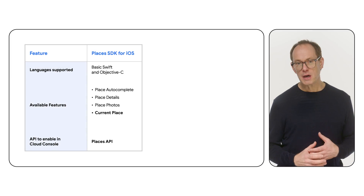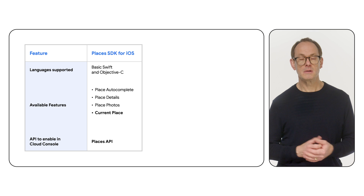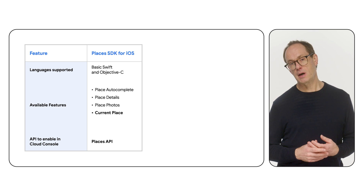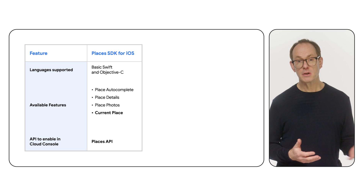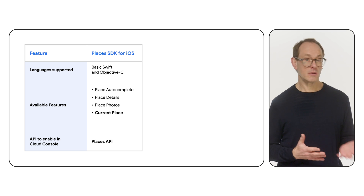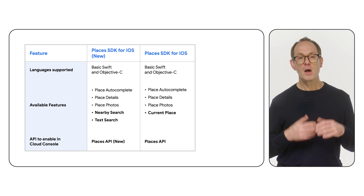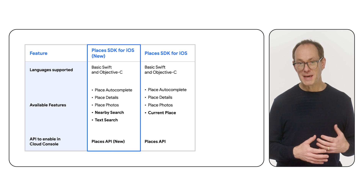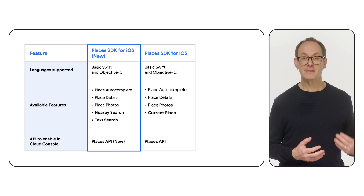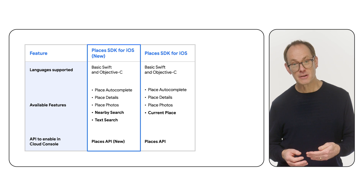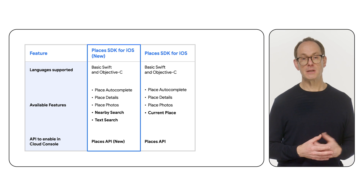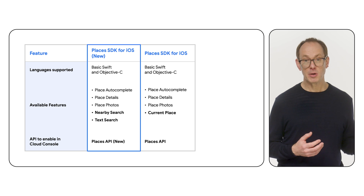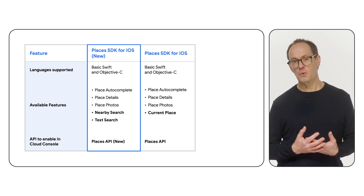Places SDK for iOS has been around the longest. It offers basic Swift support and a minimal set of APIs. To use it, you need to enable Places API in the Google console. Places SDK for iOS New also offers basic Swift support and adds nearby search and text search from the new Places APIs. To enable it, look for Places API New in the Google console.